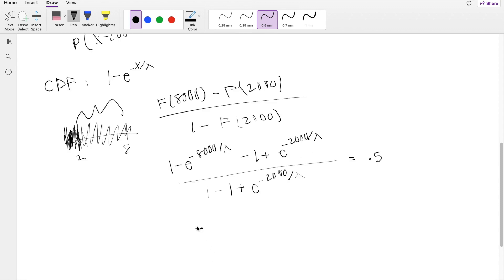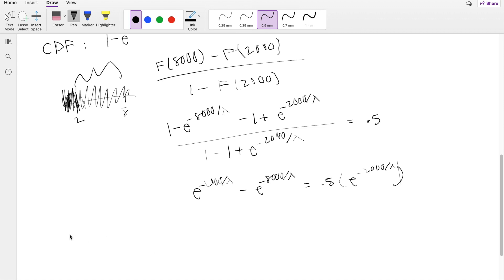So then simplifying this a little bit, you get e to the negative 2,000 over lambda minus e to the negative 8,000 over lambda is equal to 0.5 times e to the negative 2,000 over lambda. So right here, I can actually pause and say set X equal to e to the negative 2,000 over lambda.